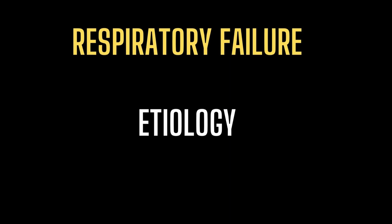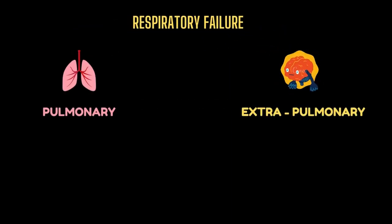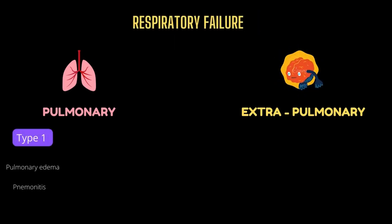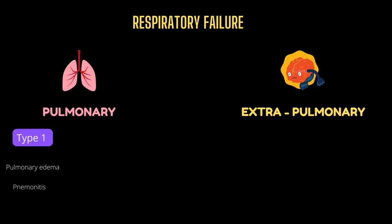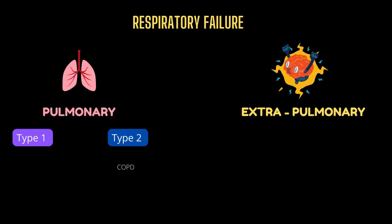Let's understand the etiology of respiratory failure. Respiratory failure occurs due to either a pulmonary or extrapulmonary cause. Alveolar abnormalities that cause type 1 hypoxemic respiratory failure include pulmonary edema and severe pneumonia. Exacerbation of chronic obstructive pulmonary disease and acute severe bronchial asthma, seen in type 2 respiratory failure, are examples of upper and lower airway obstruction.